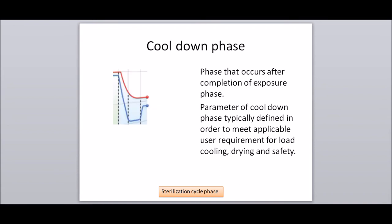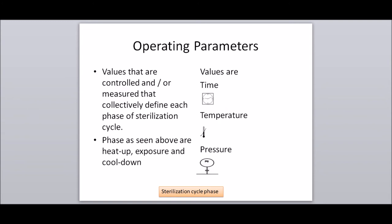Cooldown phase: the phase that occurs after completion of the exposure phase. The parameters of the cooldown phase are typically defined to meet applicable user requirements for load cooling, drying, and safety. Operating parameters: values that are controlled and/or measured that collectively define each phase of the sterilization cycle — heat up, exposure, and cool down.